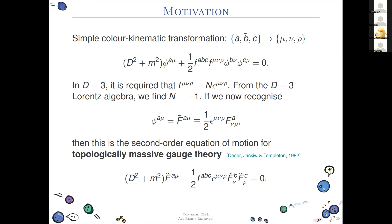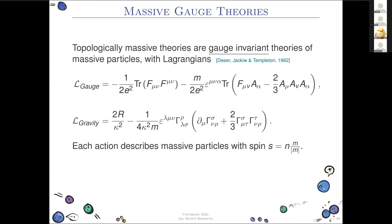You then have to identify this field with something, and in three dimensions the most natural thing is the dual of the field strength. That gives you the second-order equation of motion for a topologically massive gauge theory. So we started with a biadjoint scalar, did the most naive thing possible — changed one color index to a Lorentz index — and landed on topologically massive gauge theory.